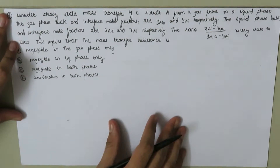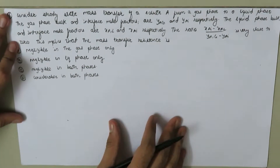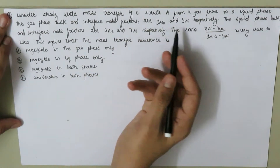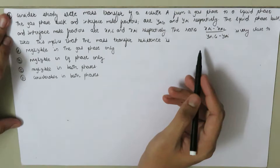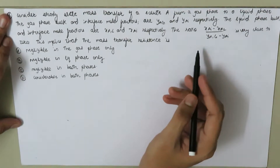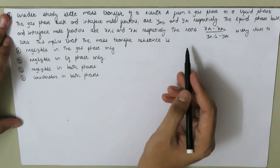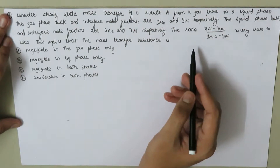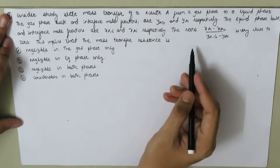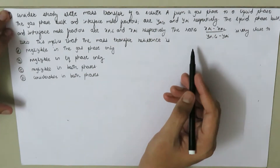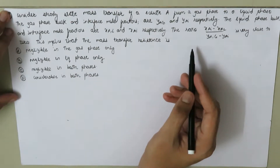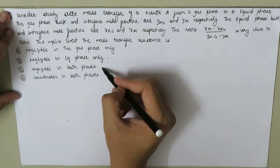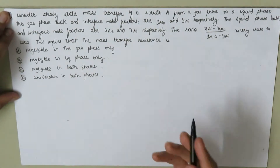Now consider the steady-state mass transfer of solute A from the gas phase to the liquid phase. The gas phase bulk and interface mole fractions are Y_AG and Y_I respectively, and the liquid phase bulk and interface mole fractions are X_AL and X_AI respectively. The ratio (Y_I − X_AI) / (Y_AG − Y_I) is very close to zero. This implies that the mass transfer resistance is negligible in the gas phase only, the liquid phase only, both phases, or considerable in both phases.